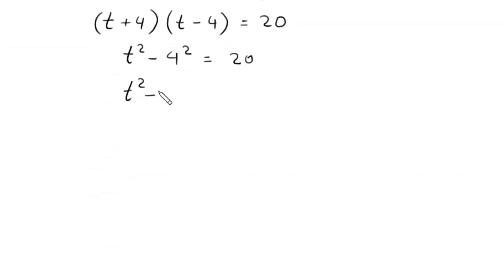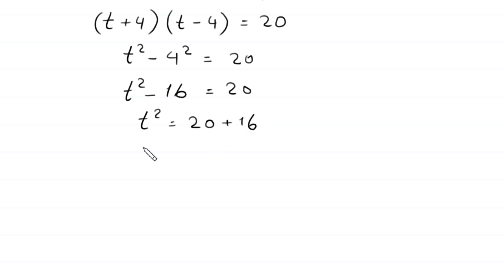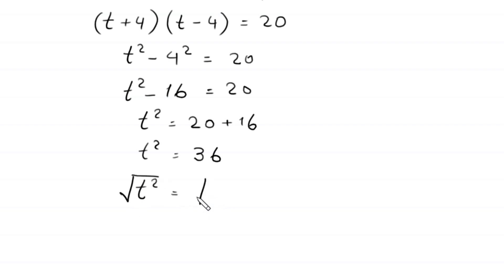So t squared minus 16 equals 20. Moving negative 16 to the right-hand side, t squared equals 20 plus 16, so t squared equals 36. Taking the square root of both sides, t equals plus or minus 6.